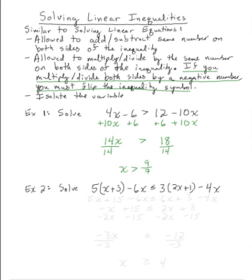Here's a second example. Solve the inequality 5 times the quantity x plus 3 minus 6x is less than or equal to 3 times the quantity 2x plus 1 minus 4x. The first thing that I'm going to do is simplify each side of the inequality. So let me apply the distributive property.